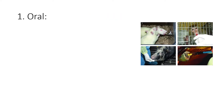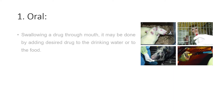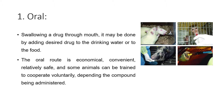The first one is the oral route of administration. Swallowing of drug through mouth — it can be done by adding a desired drug to the drinking water or to the food. The oral route is economical, convenient, relatively safe, and some animals can be trained to cooperate voluntarily depending on the compound being administered.